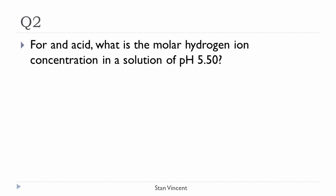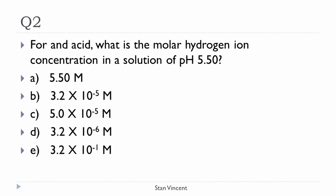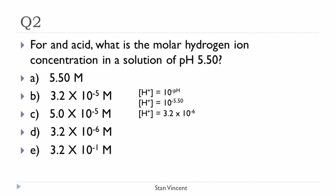Question 2: For an acid, what is the molar hydrogen ion concentration in a solution of pH 5.50? Pause the video, solve the problem, and pick the best answer from the five choices provided. The equation to determine the hydrogen ion concentration from the pH value is: [H+] = 10^(-pH). Substituting, [H+] = 10^(-5.50) = 3.2 × 10^(-6). The correct answer is choice D.